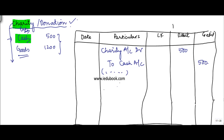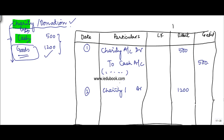Now, if instead of cash I give out goods worth ₹1200, in this situation the expense account is charity or donation. So charity or donation account is debited by ₹1200, because it is an expense and the expense is increasing — increase in an expense is debited. However, instead of paying cash or bank, I am giving out goods.